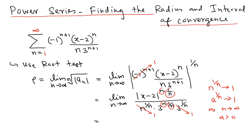After simplification, the only things left are the absolute value of x minus 2 and a factor of one-third. So rho equals one-third times the absolute value of x minus 2. From the root test, we know that if rho is less than 1, the series converges absolutely.